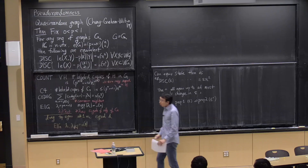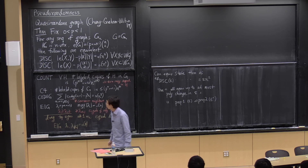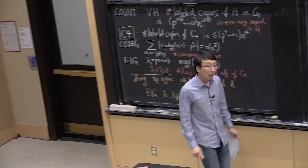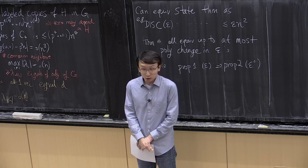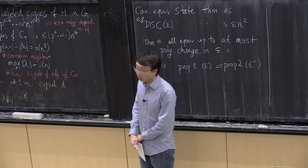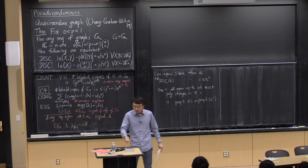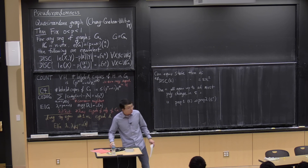The most surprising part of this theorem, the one I want you to pay the most attention to, is the C4 condition. This seems, at least at face value, the weakest condition among all of them — it just says the correct C4 count. But it turns out to be equivalent to everything else. There's something special about C4: if I replace C4 by C3 — just triangles — then it is not true. I want you to think about why C4 plays this important role.